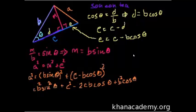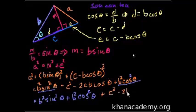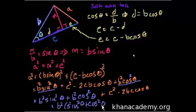And now let's see if we can do anything interesting. Well, if we take this term and this term, we get those two terms are B squared sine squared of theta plus B squared cosine squared of theta. And then we have plus C squared minus 2BC cosine theta. Well, what does this simplify to? This is the same thing as B squared times the sine squared theta plus cosine squared of theta. Something should be jumping out at you.